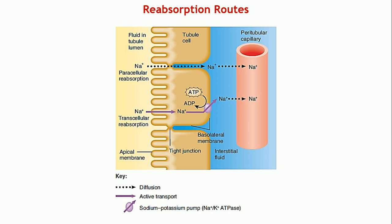Now, how exactly does reabsorption take place? The epithelial cells lining the renal tubules form a single layer around the lumen — the space within the tube-like tubule. The filtrate is present in this lumen. From here, substances can cross this single layer of epithelial cells, reach the interstitial fluid, and then enter the peritubular capillaries or vasa recta that supply these tubules.